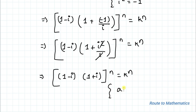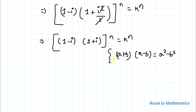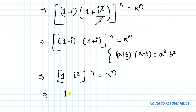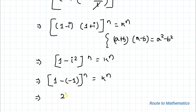We have the algebraic identity: (a + b)(a - b) equals a² - b². Taking a as 1 and b as i, our equation becomes (1 - i²)^n equals k^n. We already know that i² is -1, so this becomes (1 - (-1))^n equals k^n, which gives us 2^n equals k^n.